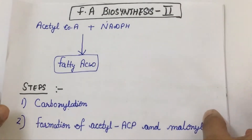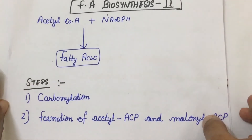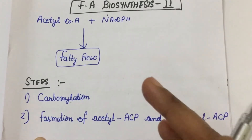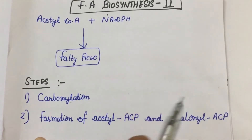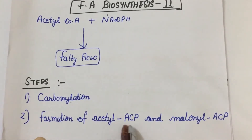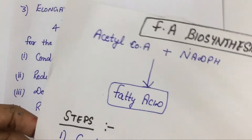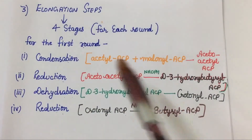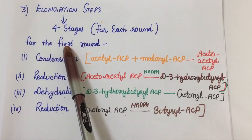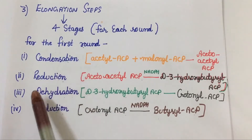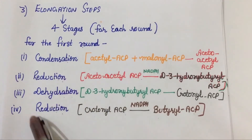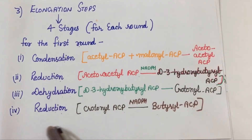Acetyl coenzyme A plus NADPH will form fatty acids. There are several steps involved in the formation of fatty acids. First is carboxylation, then formation of acetyl-ACP and malonyl-ACP, then elongation. Elongation has four stages for each round: condensation, reduction, dehydration, and reduction. You can have an idea by looking at this small chart.